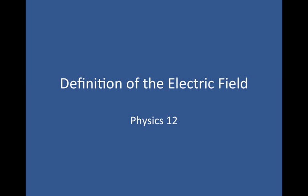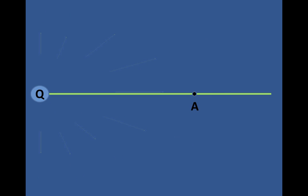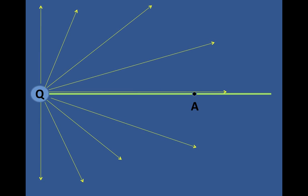Let's look at the definition of the electric field. If I have a positive charge Q on the left here, it has a field emanating outward from that charge. It doesn't just lie in the plane of the computer — it goes outward in every single direction. It's like a sphere. In every direction there is the field, and we represent them by lines with arrows. It goes outward from a positive charge.